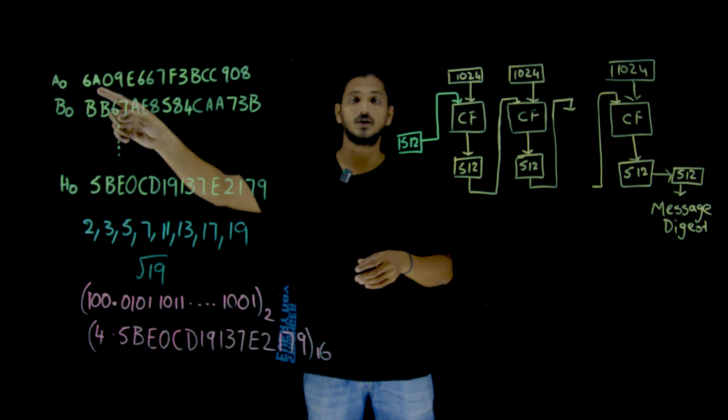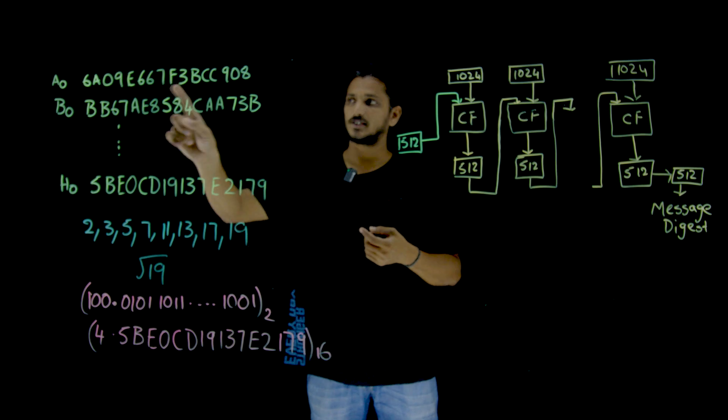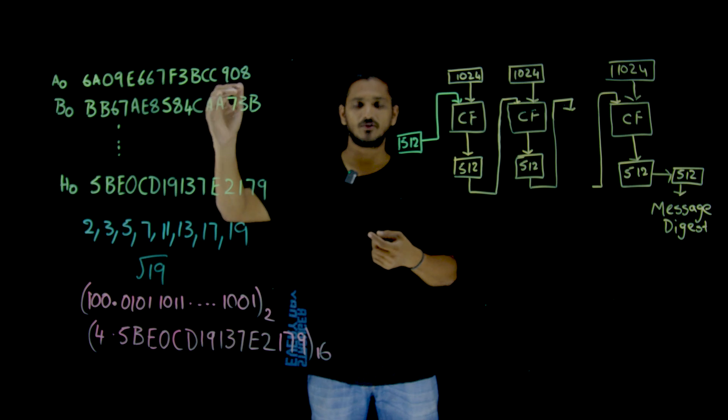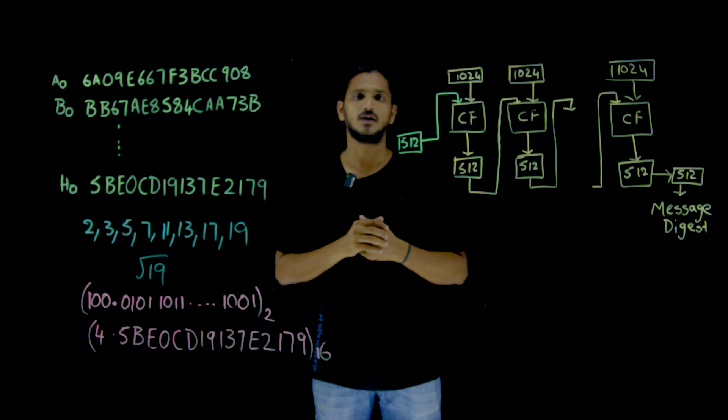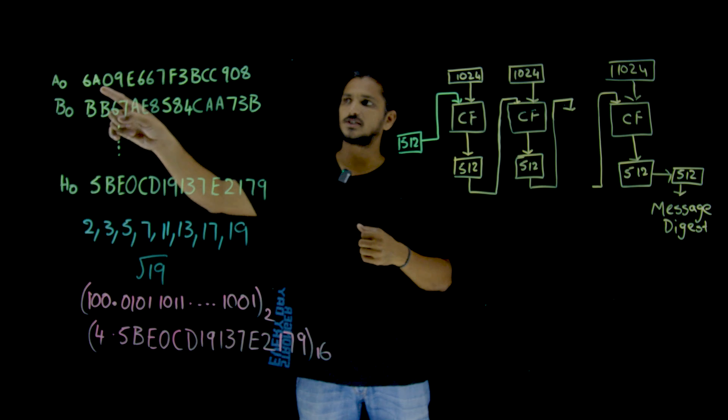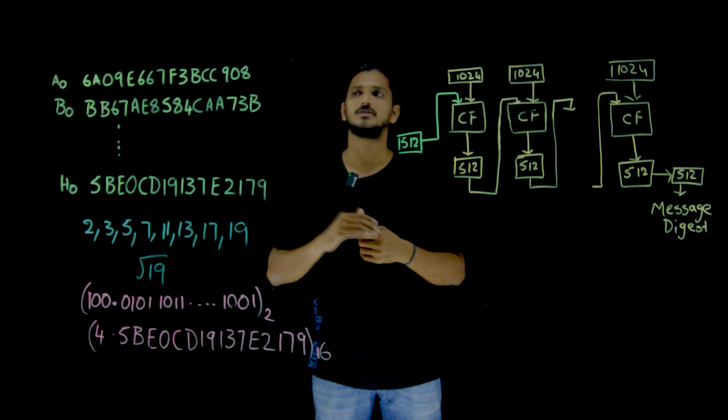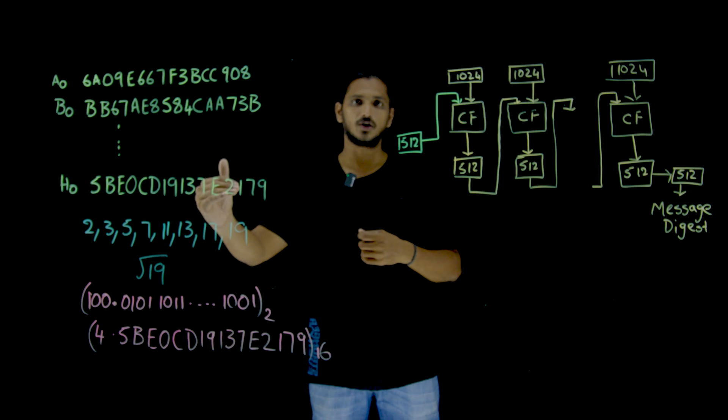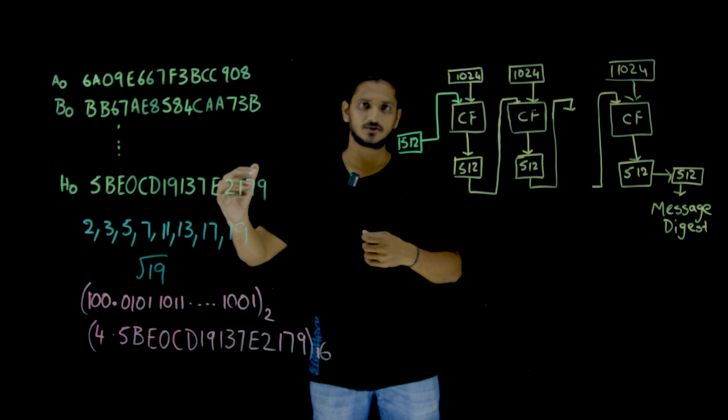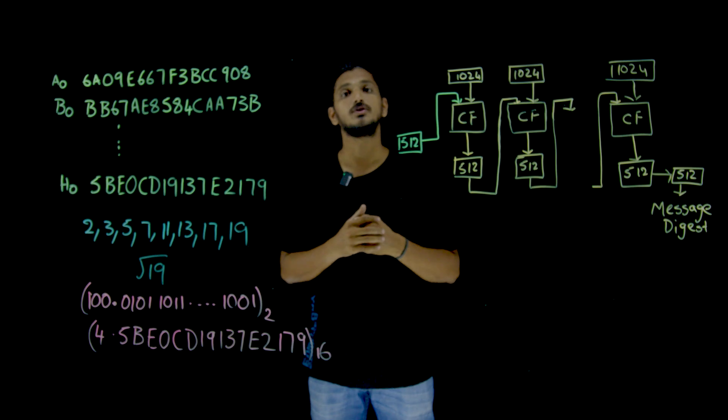For A naught, this is given in hexadecimal. Hexadecimal means 64 bits divided by 4, which gives us 16 hexadecimal numbers. If you convert these 16 hexadecimal values into binary, you are going to get 64 bits. Similarly, A naught, B naught, 64 bits, C naught up to H naught. 8 words. These are the constants which we are going to use in the first 512 bits.